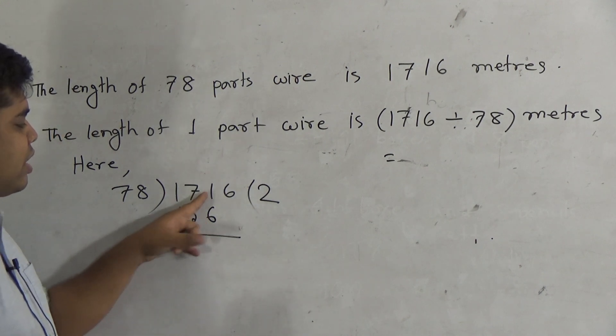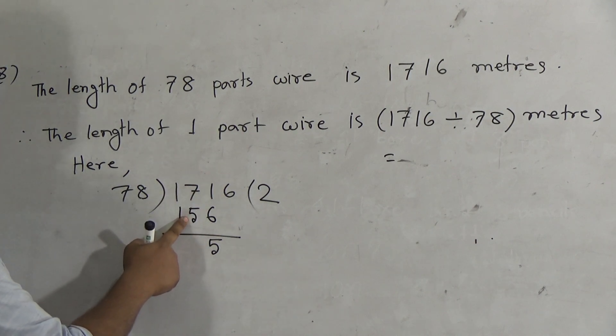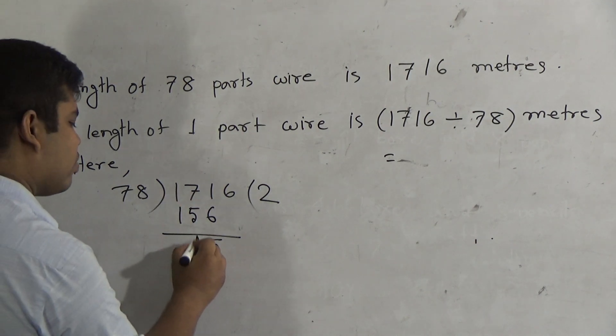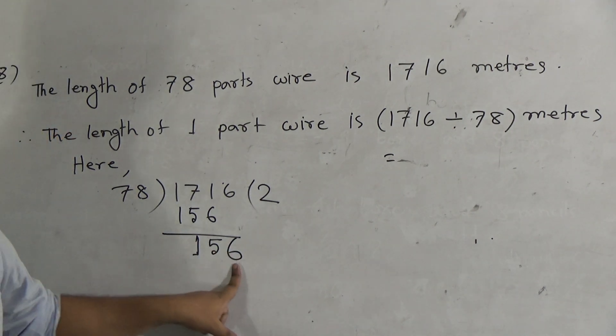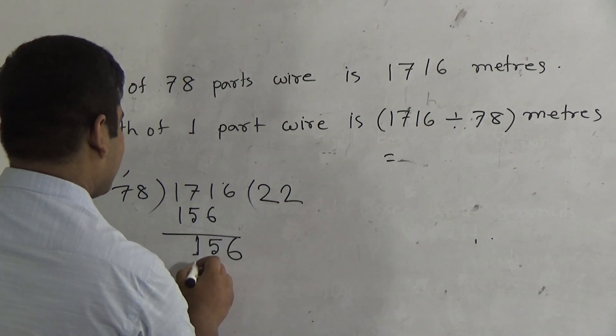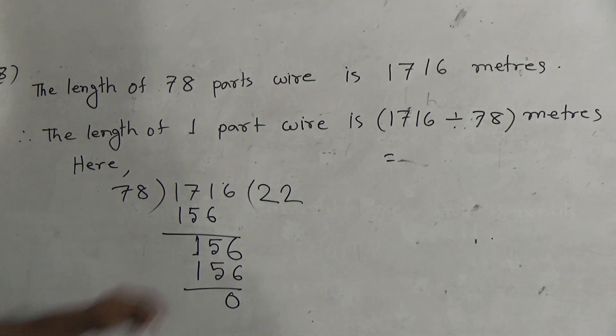6 to 11, we get 5, carrying 1. That 1 is added with this 5. It will be 6. 6 to 7, it is 1 and 6. Listen, 156. In 156, 78 goes in 2 times. That means, 156. If we subtract, then we get 0.